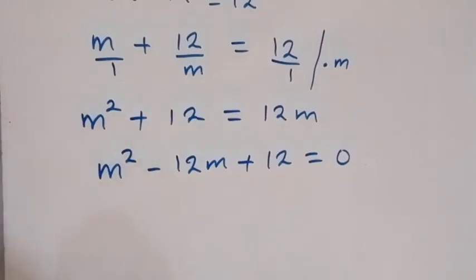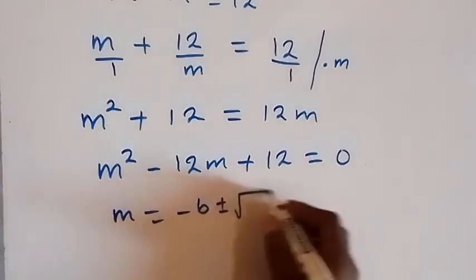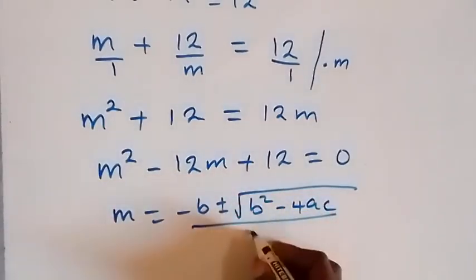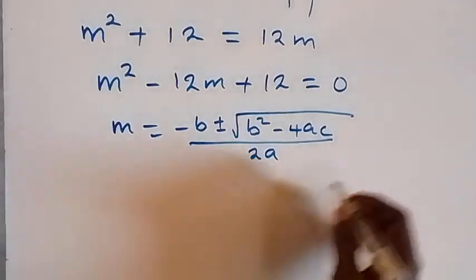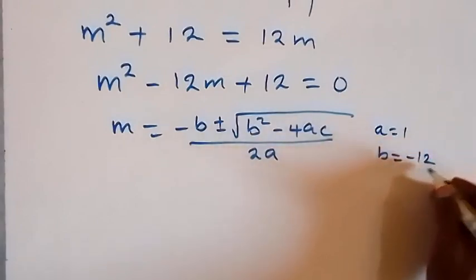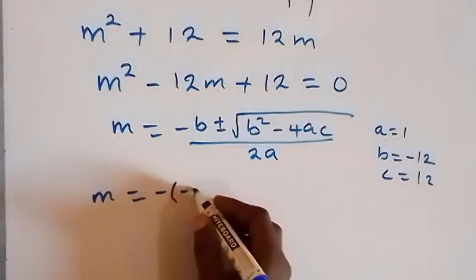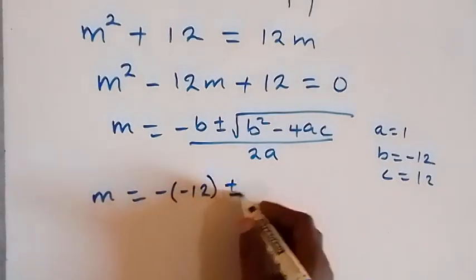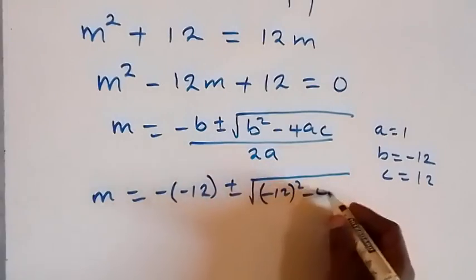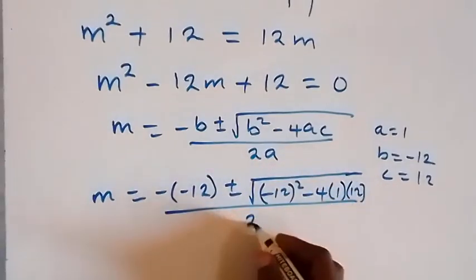Using the quadratic formula, m equals minus b plus or minus square root of b squared minus 4ac, all over 2a. Here a is 1, b is minus 12, and c is 12. So this becomes m equals minus (minus 12) plus or minus square root of (minus 12) squared minus 4 times 1 times 12, over 2 times 1.